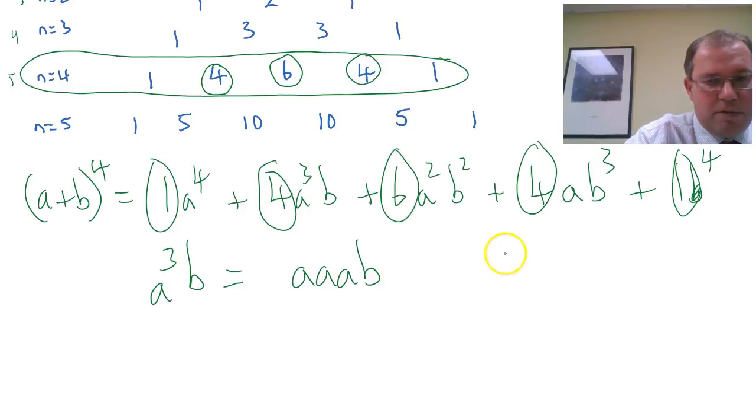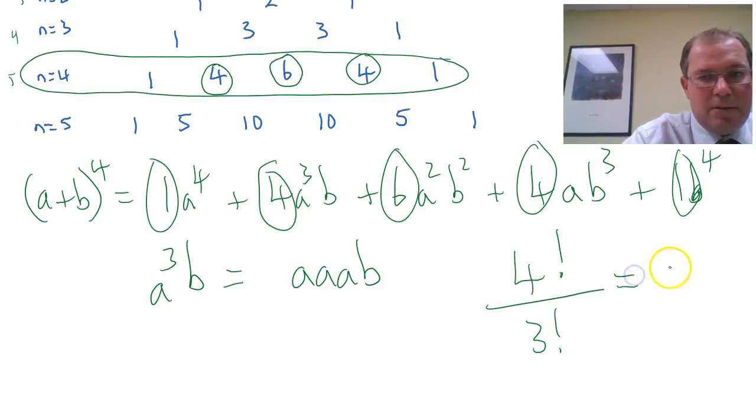So if you remember, we've got 4 items, so if they were all different, there'd be 4 factorial, divided by 3 items are the same, 3 factorial, cancelling out there to leave you with the correct coefficient 4.